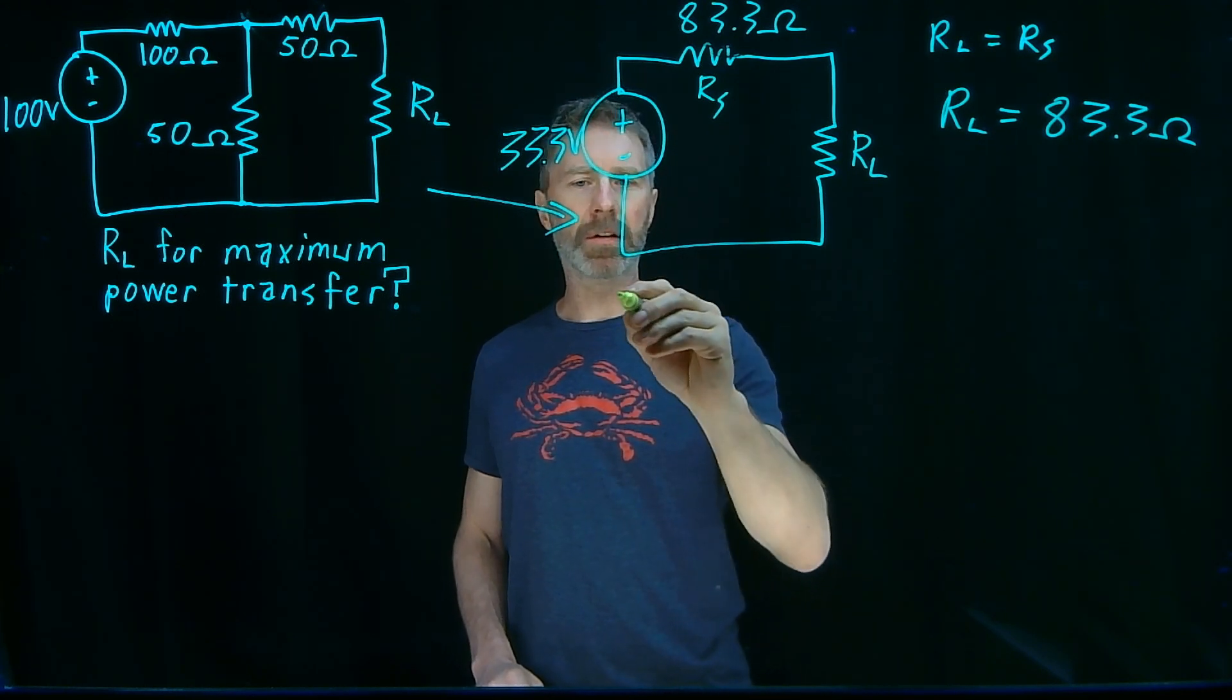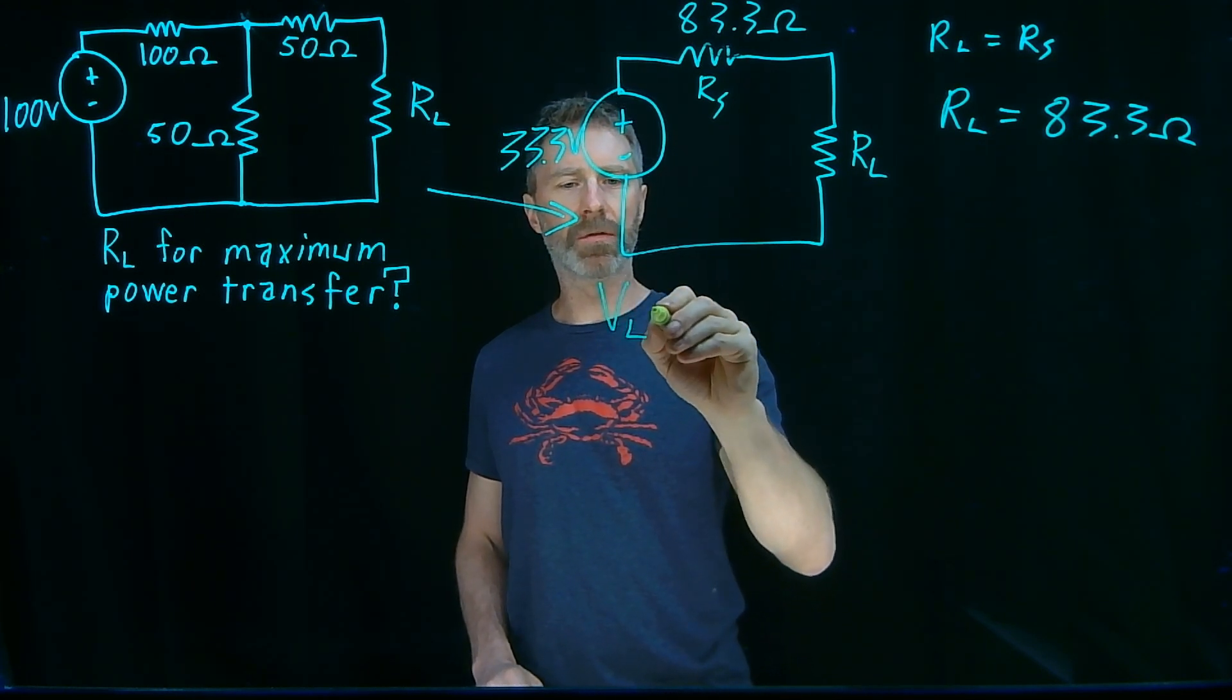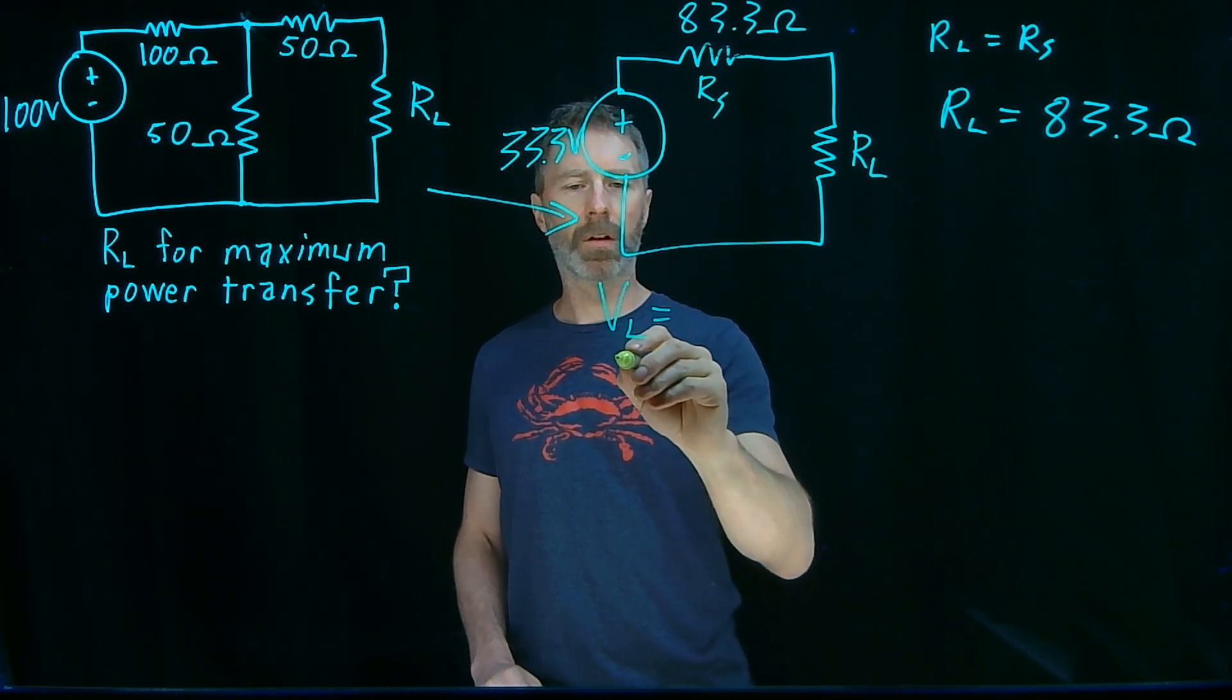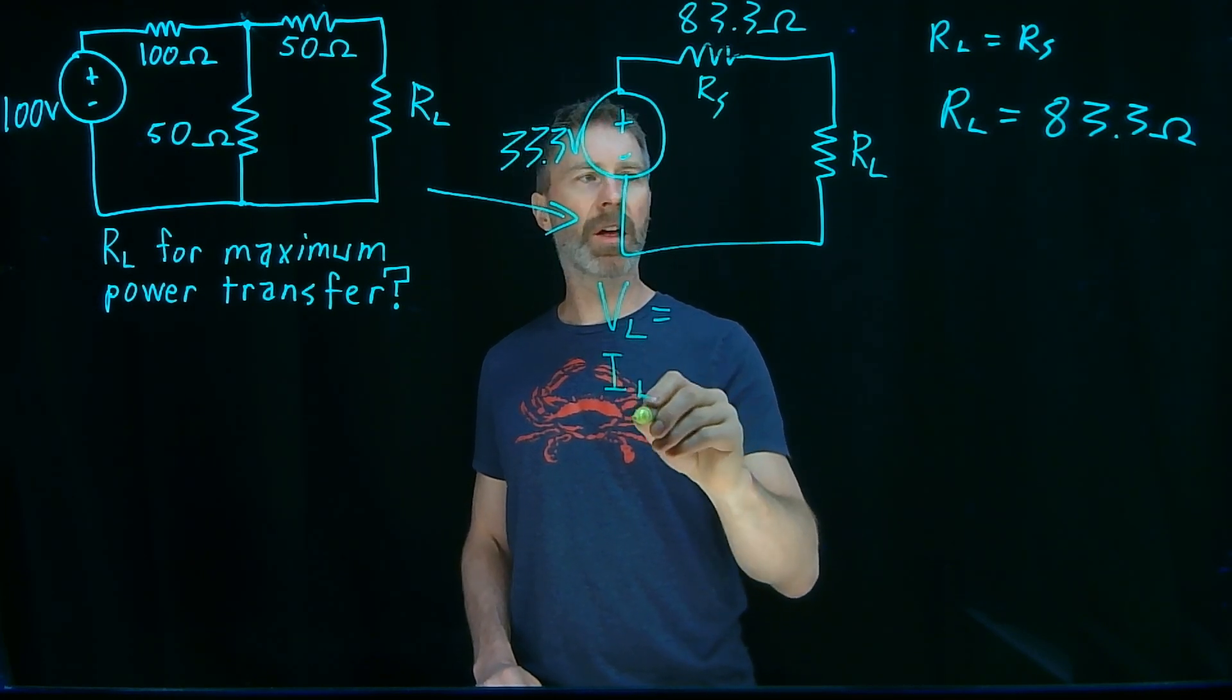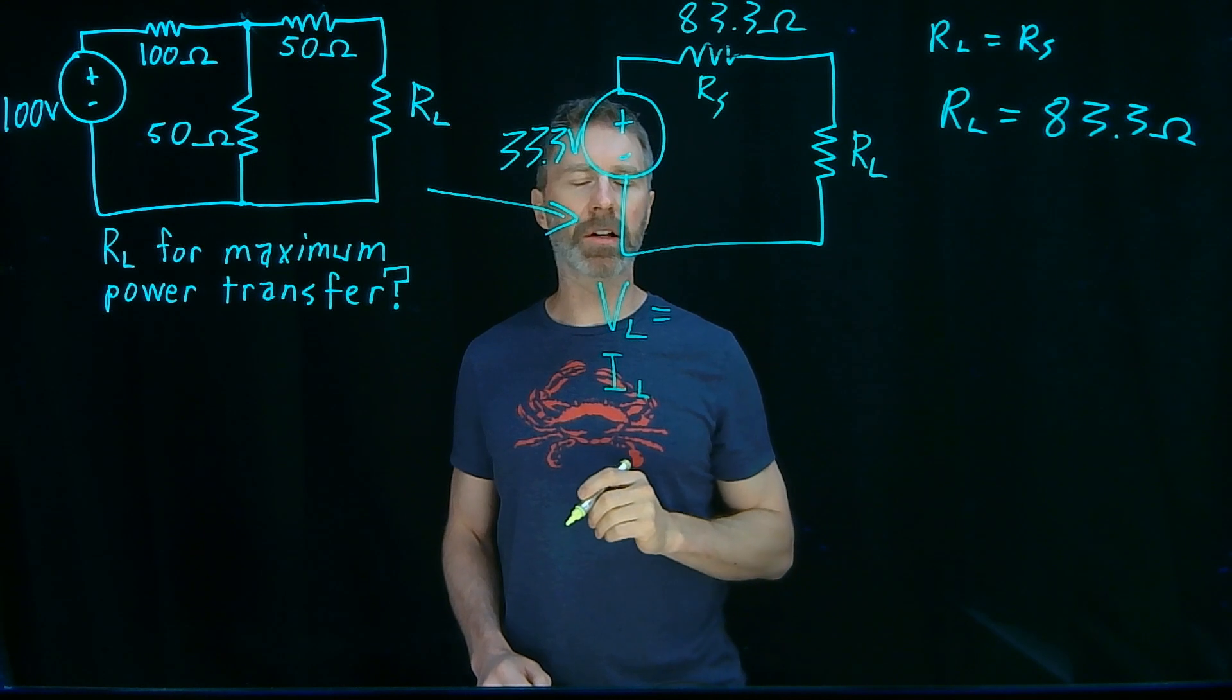We could add a couple other things. What's the voltage across the resistor? What's the current through the resistor? And then we could figure out what is that power that's maximally transferred?